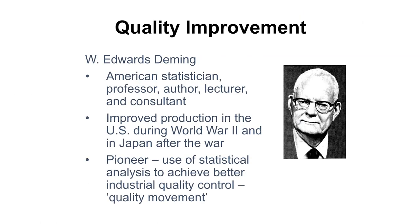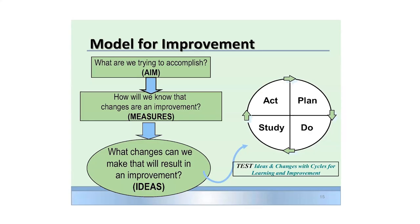Deming was a statistician, professor, and author who pioneered statistical analysis to improve industrial control problems. He created the PDSA cycles — Plan, Do, Study, Act. The way I like to think of it: What are we trying to accomplish? What's our goal? How do we know the changes are an improvement? What can we measure to know we've met our outcomes? And what changes can we make that will result in improvement? This is a virtuous cycle.